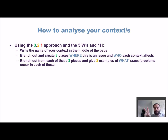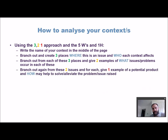From those three places, branch out twice from each area to two new points. From each one of those points, give two examples of what a problem might be, or what that user — the 'who' — might experience in that place in relation to the chosen context. So you've done three, and now you do two.